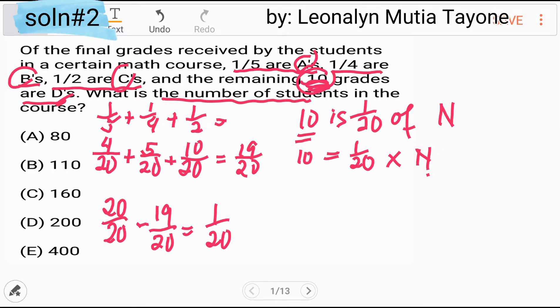Para ma-isolate natin si N dito, itong si 1 over 20, pang divide na siya sa kabila. So maging 10 divided by 1 over 20 equals N. Now, kopyahin si 10. Ang division maging multiplication, mayroon tayong support video on how to divide fraction. So 1 over 20, reciprocal niya ay 20 over 1 equals N.